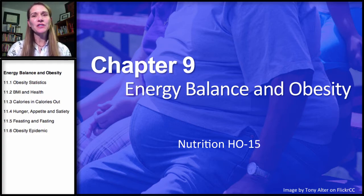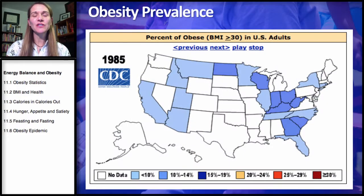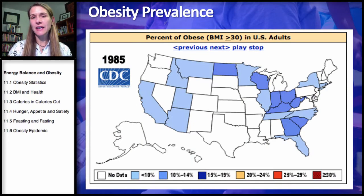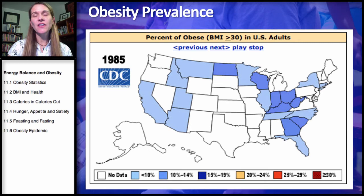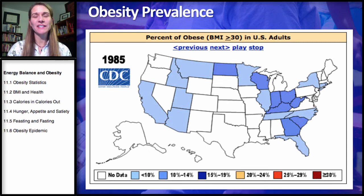What I'd like to do is start with some CDC data — the Center for Disease Control — and their data mapping for obesity prevalence in the United States.